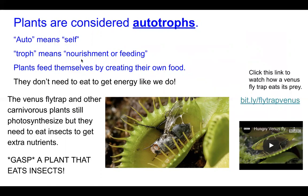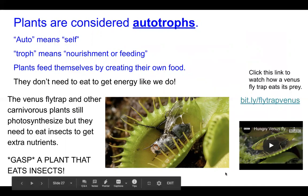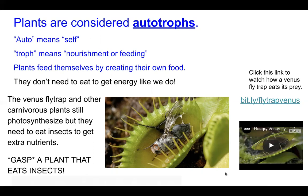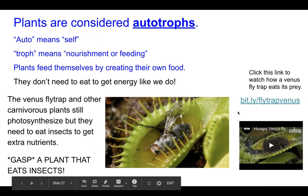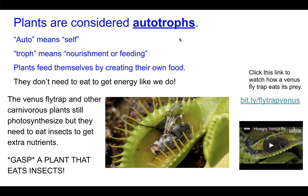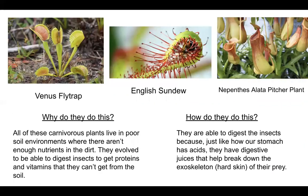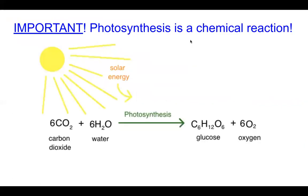'Auto' means self and 'troph' means nourishment or feeding. Plants feed themselves by creating their own food. Most plants — except for Venus flytraps — don't really have mouths or stomachs; they make their own food by doing photosynthesis. We, on the other hand, are not autotrophs — we can't make our own food by standing in the sun; we have to eat other things to get our energy.